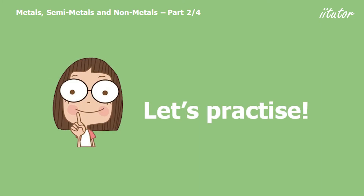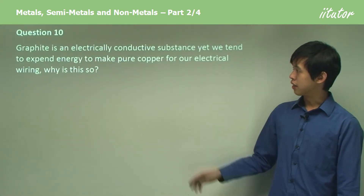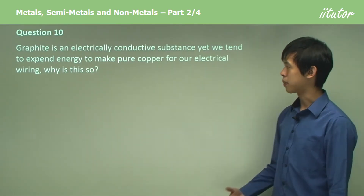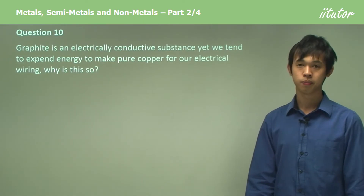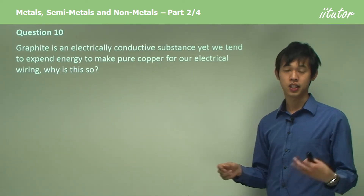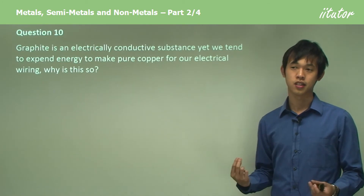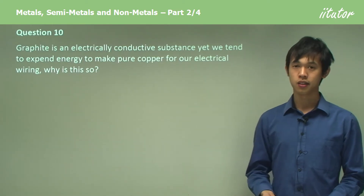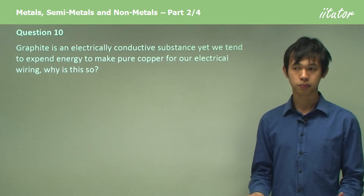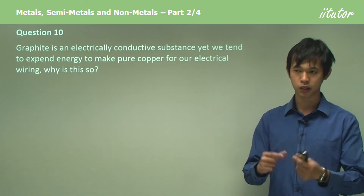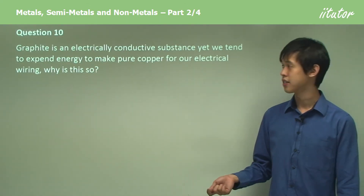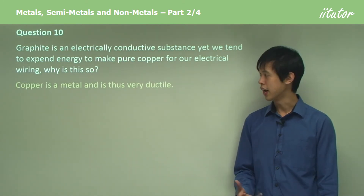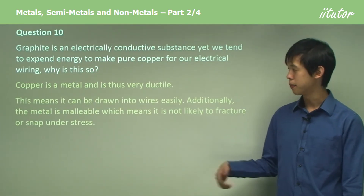Graphite is an electrically conductive substance, yet we tend to expend a lot of energy to produce pure copper for electrical wiring. Why is this? Graphite is good at conducting electricity and has many uses as an electrical conductor, but we spend a lot of time, money, and energy getting copper out of the ground. So why don't we just make wires out of carbon if there's plenty of it available?